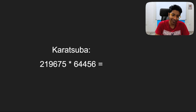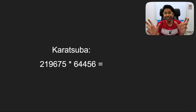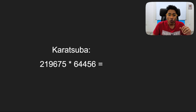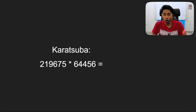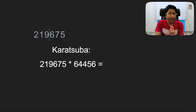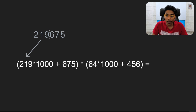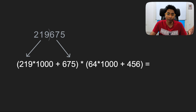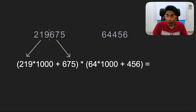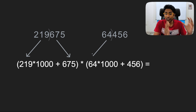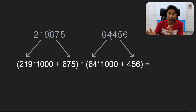Here comes the saver: Karatsuba. I thought he was Japanese but it turns out he's Russian. When you have two very large numbers and need to multiply them, you can do this recursively. Take 219675 and break it into two parts: 219 and 675. So 219 is multiplied by 1000, then you add the remaining 675. Similarly, 64,456 is written as 64,000 plus 456.